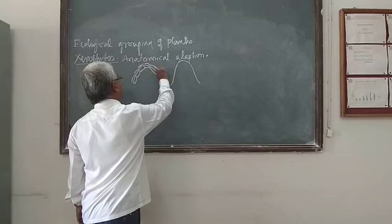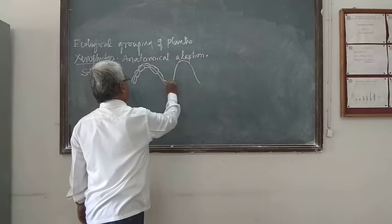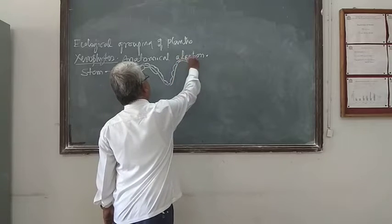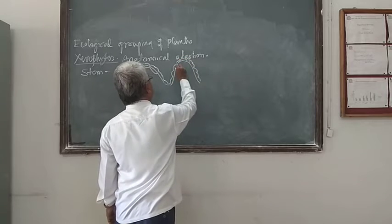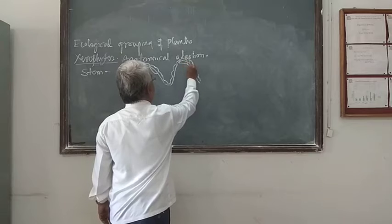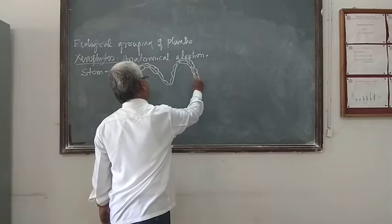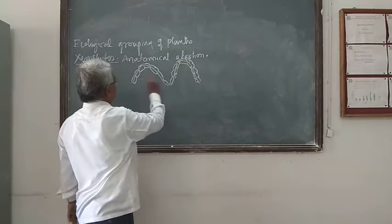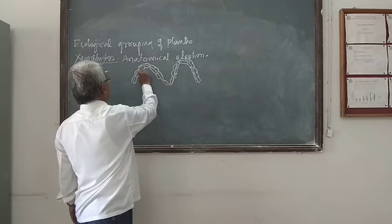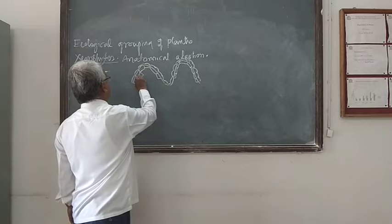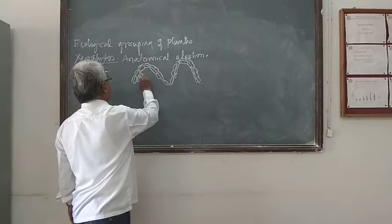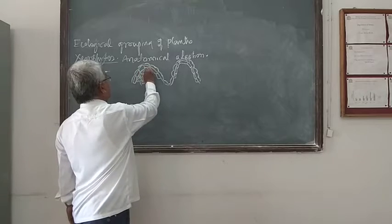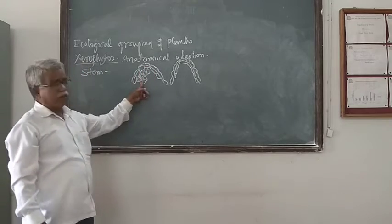The cuticle is present on the upper epidermis. The epidermal region is covered by the help of the thick cuticle, and below it there is the epidermis. Below the epidermis, there is a thick-walled parenchymatous cell — that is the hypodermis, or thick-walled hypodermis. There is a thick-walled hypodermis present in the transverse section.